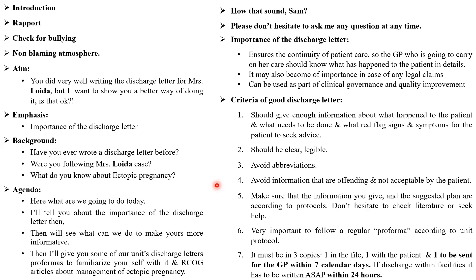Please don't forget to mention that the discharge letter will be in three copies. One will be kept in the patient's file. One will be given to the patient herself. One will be sent to the GP. There are two time limits: if the patient is going home in a stable condition, it has to be sent to the GP within seven calendar days — not seven working days, within seven calendar days. But if the discharge is within the facility, for example from the gynae ward to the surgical ward, the discharge summary has to be written as soon as possible within 24 hours.